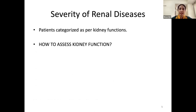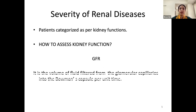Once you know the patient has chronic kidney disease, the next step is to categorize the severity of the renal disease. To do this, we need to assess kidney function. We assess it using something called the glomerular filtration rate, which is the volume of fluid filtered from the glomerular capillaries into Bowman's capsule per unit time.